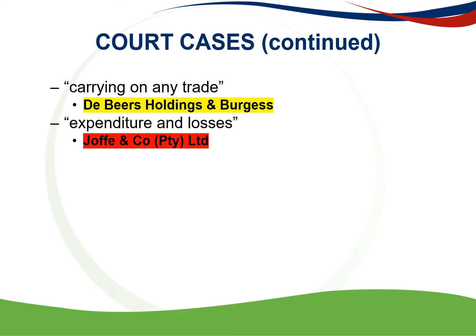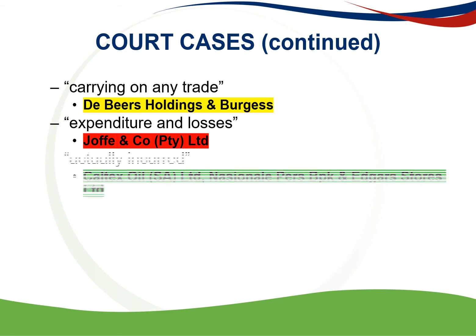The next requirement — expenditure and losses. In Joffe and Company, the word 'loss' is sometimes used to signify a deprivation suffered by the loser, usually an involuntary deprivation, whereas 'expenditure' usually means a voluntary payment of money. The next requirement — actually incurred. In Caltex Oil, it was stated that the taxpayer may have incurred a liability which is payable only after the end of the year of assessment, and this would still be deductible. In other words, expenditure actually incurred does not mean amounts that are due and payable.